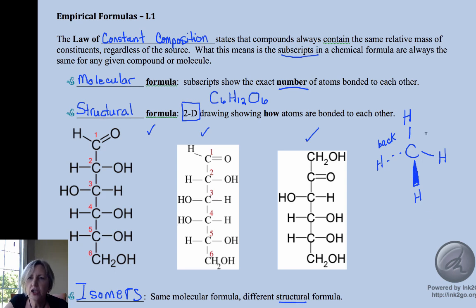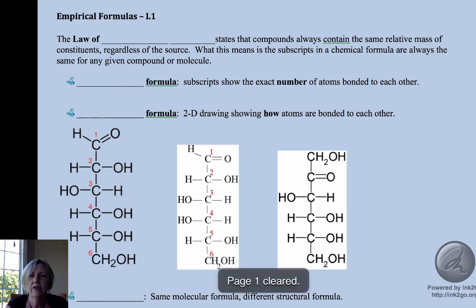You might draw methane this way, trying to show these hydrogens in the plane of the paper, this hydrogen going back behind the paper, and this hydrogen coming in front of the paper. A structural formula gives us quite a bit more information. Structure determines function. One has its double bonded oxygen on the end, the other has a double bonded oxygen one carbon in. Those have different structures, different names, different functions, and they are called isomers of one another.